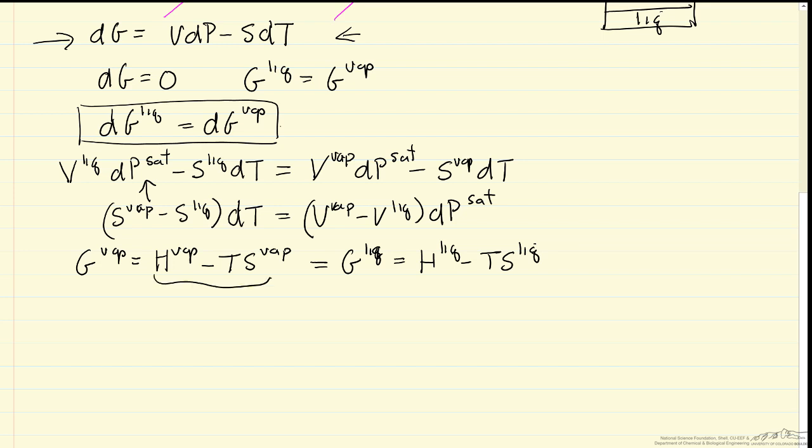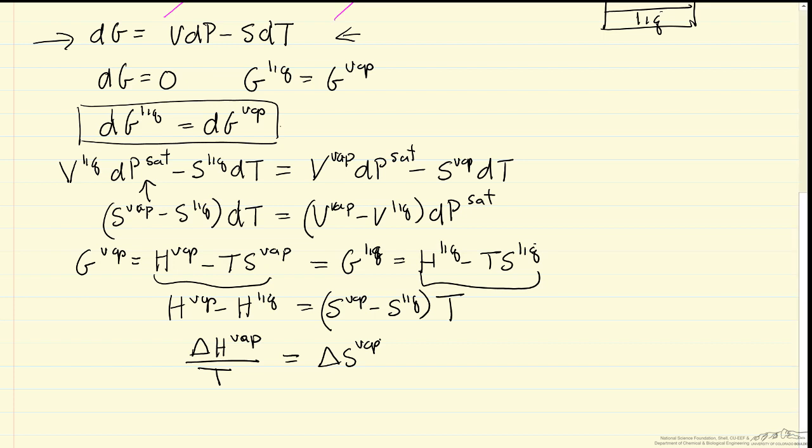Now I'm going to rearrange these two terms that are equal. Delta H vapor minus H liquid is delta H of vaporization. I'll bring this T from the other side of the equation. And likewise, the right side is delta S of vaporization. And so I'm going to go back now and substitute in here for delta S of vaporization in terms of delta H of vaporization and T.